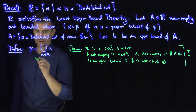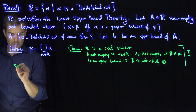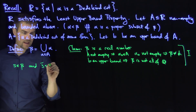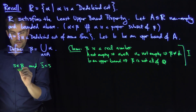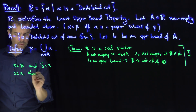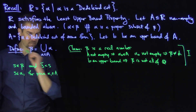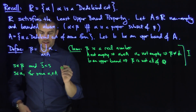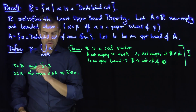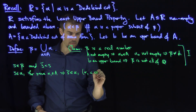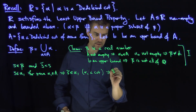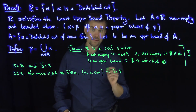That satisfies the first condition of a cut. Now I need the second condition. Suppose that S is in beta, and S-tilde is less than S. Well, if S is in beta, that says S is in alpha-one for some alpha-one in A. That tells us that S-tilde is in alpha-one, because alpha-one is a cut, and therefore S-tilde is in beta. That's the second property of cuts — anything less than something in a cut is itself in the cut.